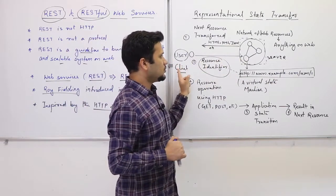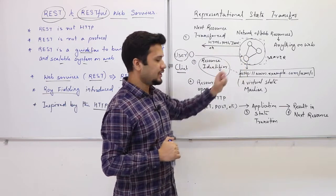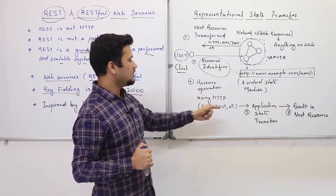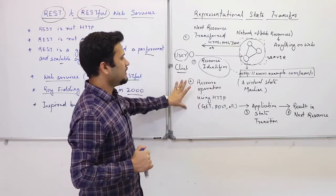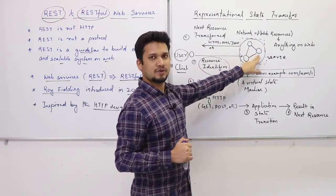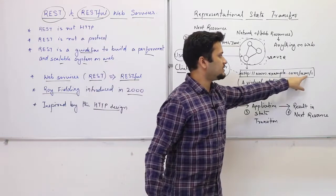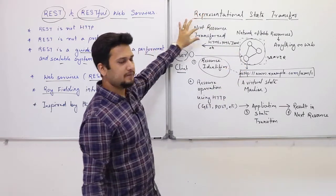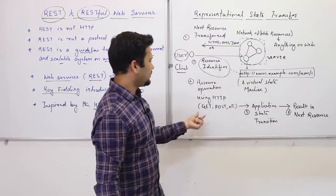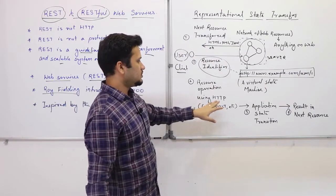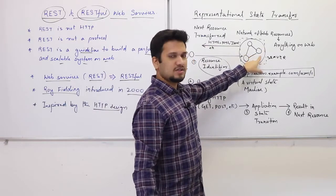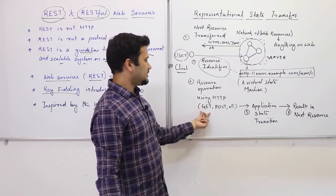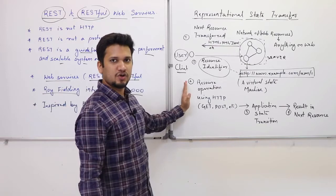The client can access a resource at a particular state, and also make changes to the state of that resource. For resource operations, you can leverage the HTTP protocol and use GET, POST, PUT, and other methods to manipulate or change the resource. For example, if the client wants to get user information it uses a GET request, and if it wants to update the username it can use the PUT method.